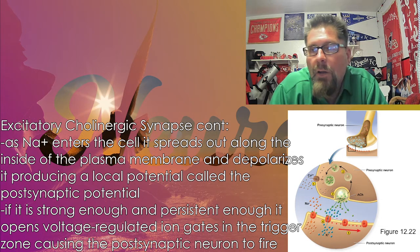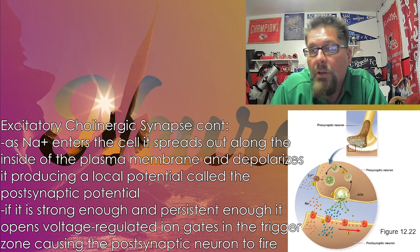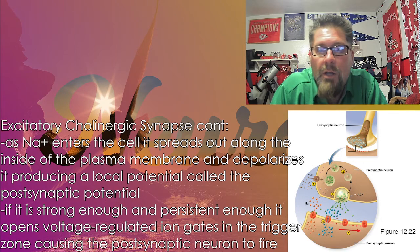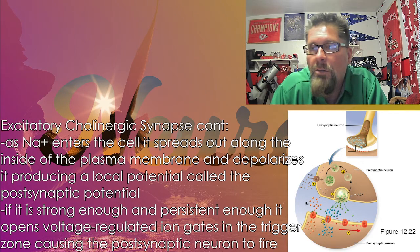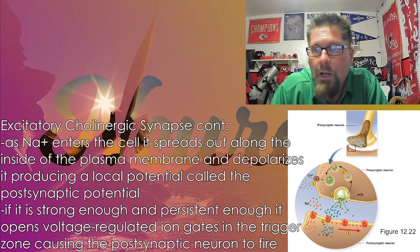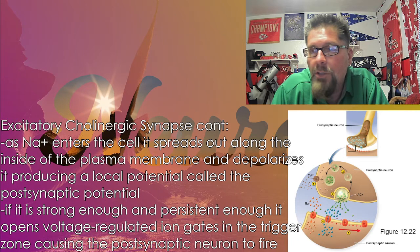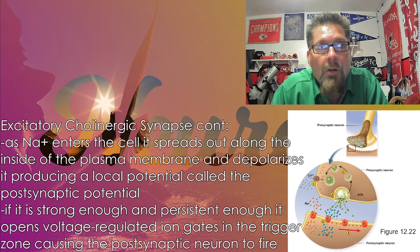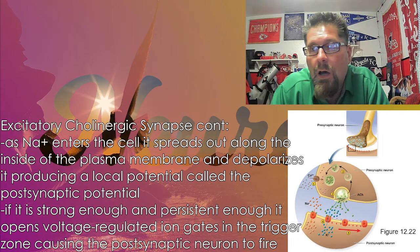As that calcium enters, it spreads out — as you can see in the diagram with the red arrow — and if the stimulus is strong enough, it opens up those voltage-regulated ion gates, causing the postsynaptic neuron to fire.